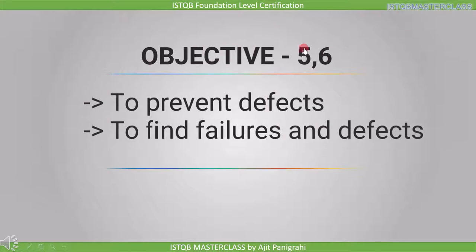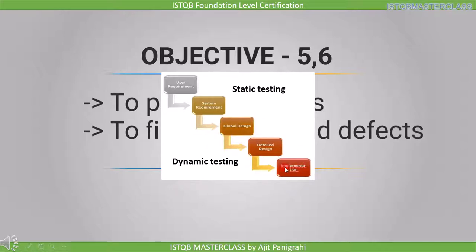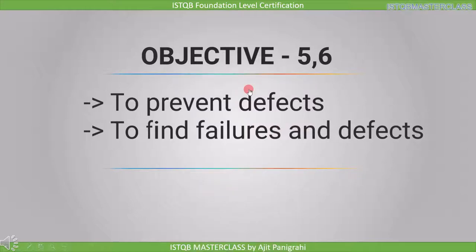Now let's discuss objectives 5 and 6 together. Objective 5 is to prevent defects and objective 6 is to find failures and defects. If you find a defect in the requirement stage, you prevent it from traveling to the next stage. Objective 6 requires us to find defects or failures in the same stage in which they are tested; otherwise the defect will travel to the next stage and it will be more costly to fix. This is why preventing defects and finding failures and defects is one of the most important objectives of testing.